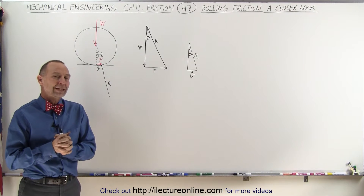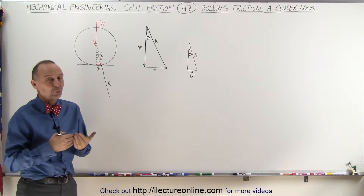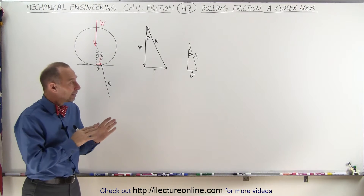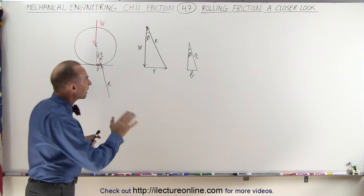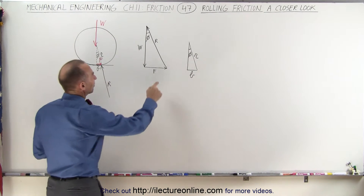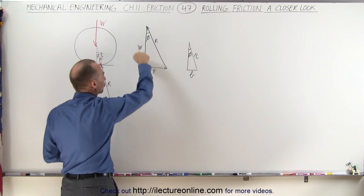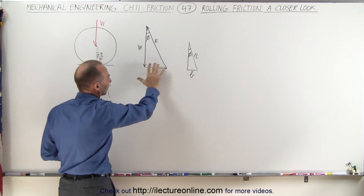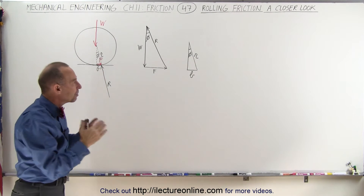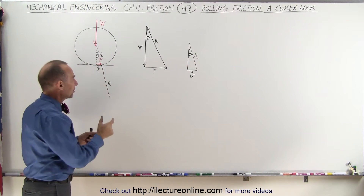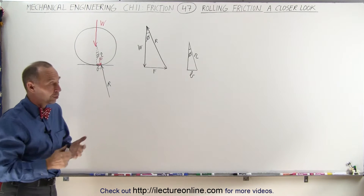Welcome to Electron Line. Here we want to take another look at rolling friction and how we derive the equation. We also want to look at the similar triangles: one triangle when we add forces together, and the other when we look at the dimensions of the tire and the coefficient of rolling friction, called b.